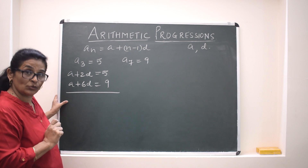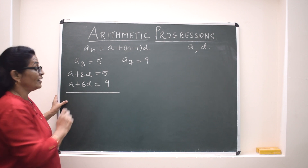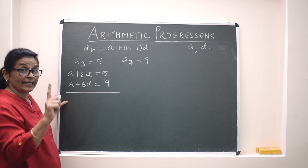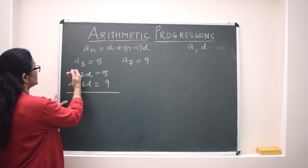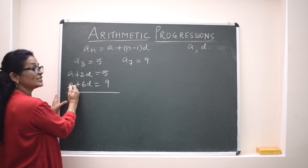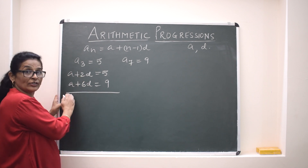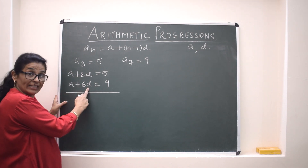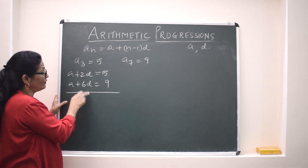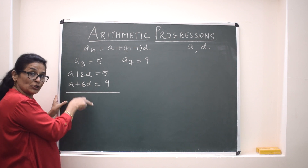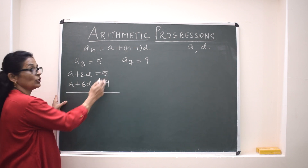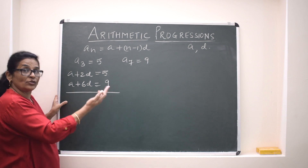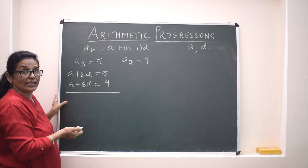We can solve these two equations simultaneously. Since A appears with the same sign and same value, if we subtract the equations one quantity will be cancelled, giving us the value of D. Once we get D, we substitute it into either equation to get A, and once we know A and D we can write the AP.